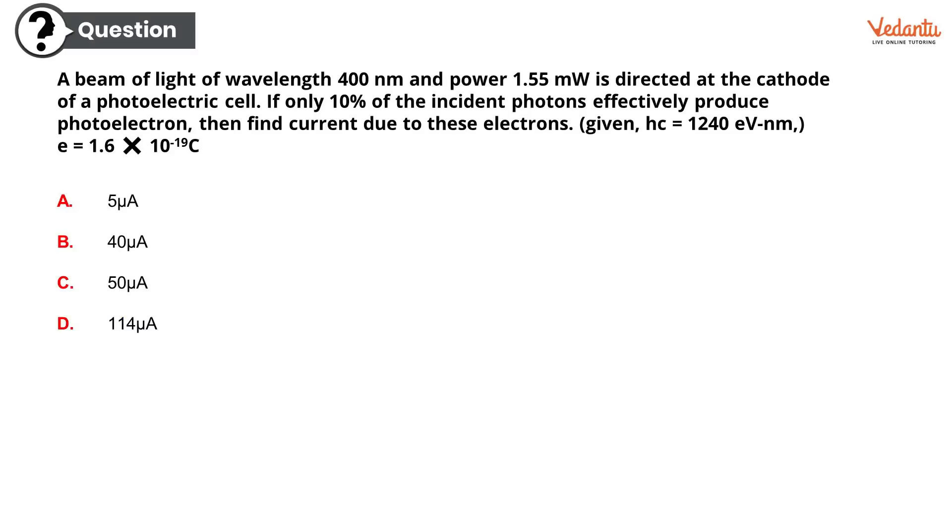Now the question belongs to my favorite chapter. A beam of light of wavelength 400 nanometers and power 1.5 milliwatts is directed at the cathode of a photoelectric cell. If only 10 percent of the incident photons effectively produce photoelectrons, then find current due to these electrons. Given hc equals 240 electron volt nanometers and e equals 1.6 × 10⁻¹⁹ coulombs. The options are: option A 5 microamperes, option B 40 microamperes, option C 50 microamperes, or option D 114 microamperes. The correct option is option C, 50 microamperes. Well done.